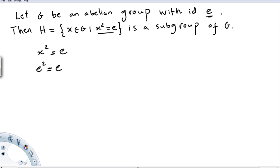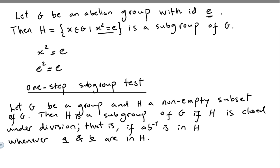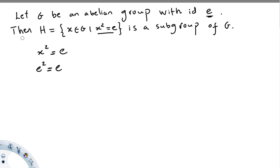Let me quickly remind you of the one-step subgroup test from the previous video: Let G be a group and H a non-empty subset of G. Then H is a subgroup of G if H is closed under division — that is, if a times B inverse is in H whenever a and B are in H.